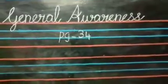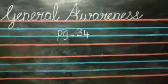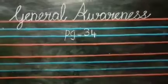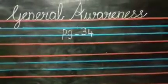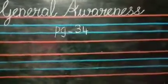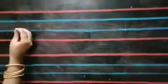Good morning, children. Now I am going to teach you page number 34 from your general awareness book. If you open your general awareness book, page number 34, you can find the pictures of domestic animals. Now I am going to teach the names of a few domestic animals.